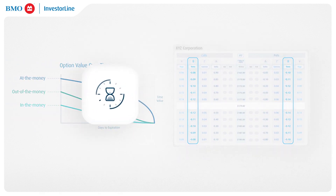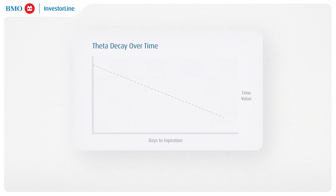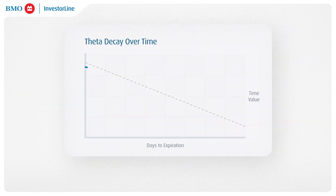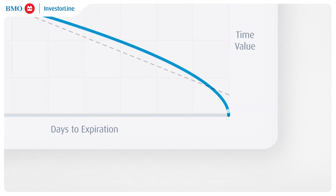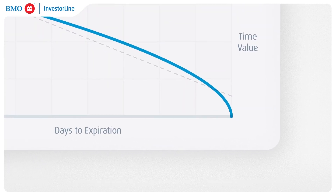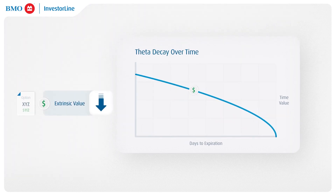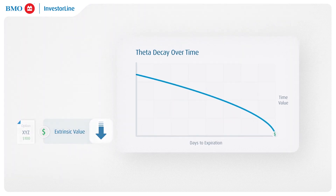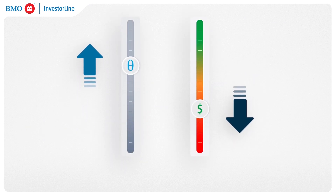As time passes, options lose value due to time decay, but this is not done in a linear fashion. If you look at the graph, you will notice that the time decay accelerates as the option approaches the expiration date. This is because the option will begin to rapidly lose its extrinsic value component. The higher the Theta value, the more the option will deplete.